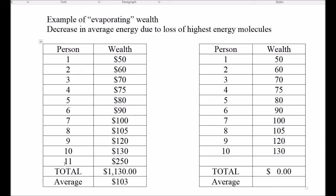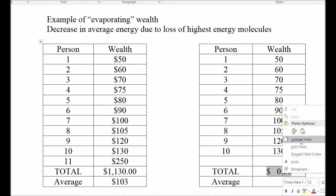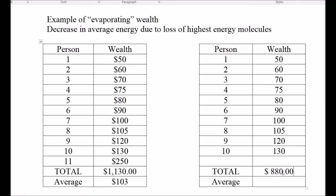Now let's imagine this number 11 here, the richest one, evaporates, leaves the population. Then I will have over here only 10 people. And now what is their average wealth? The total is now $250 less. And the average, it'll be divided over 10 persons instead of 11. But now the average wealth per person is only $88.